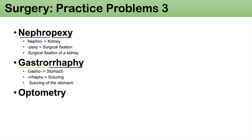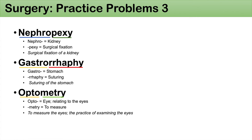The last word is optometry. Opto means eye or relating to the eyes, and -metri means to measure. So optometry literally means to measure the eyes, though in practice it refers to the profession of examining the eyes. I hope you found this lesson helpful — this was medical terminology basics for surgery. Please like and subscribe for more lessons, and check out my other medical terminology lessons as well. Thank you for watching!